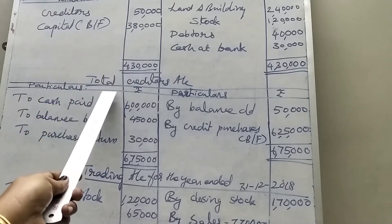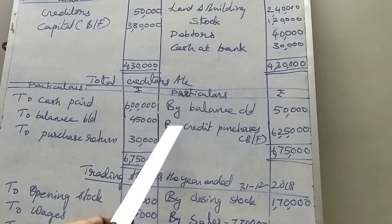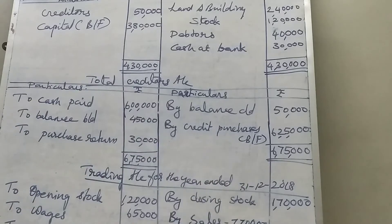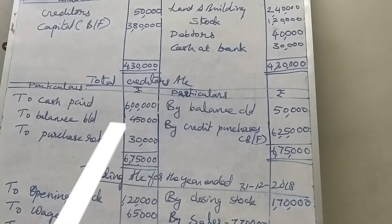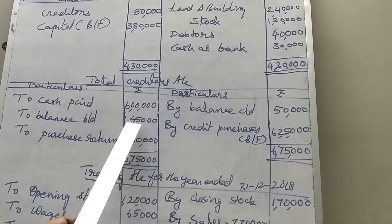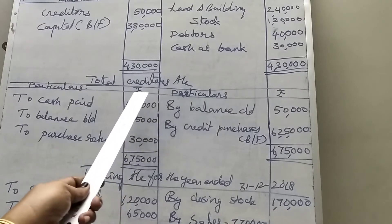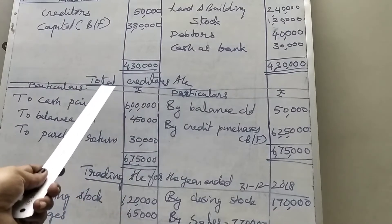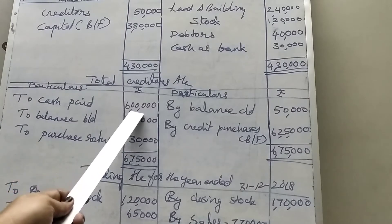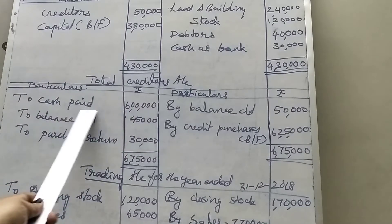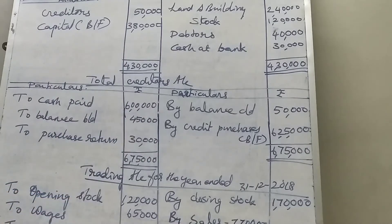Then we can find out the total creditors account in order to find out the credit purchases. Credit purchases is not given in the question. Total sales given, purchase returns given, sales returns given. But credit purchases is not given, so in order to find out the credit purchases, we want to prepare a creditors account. Cash paid to creditors — 6 lakhs — is given in the additional information.